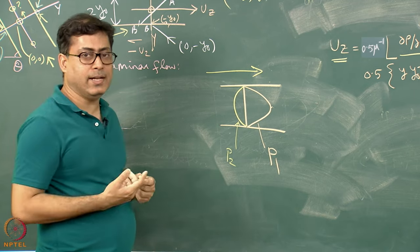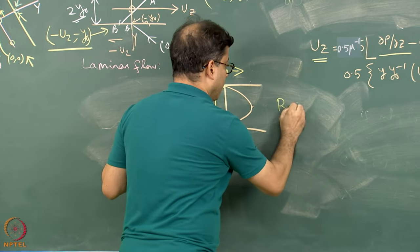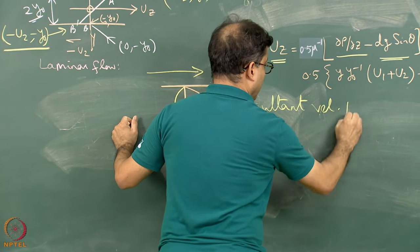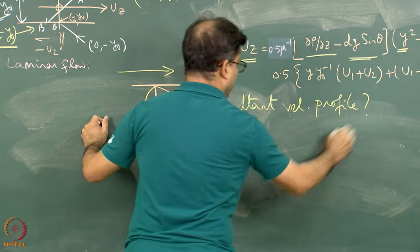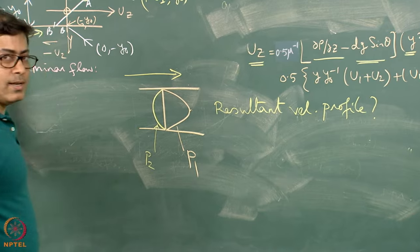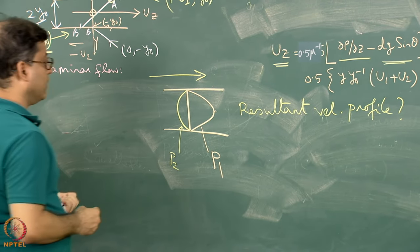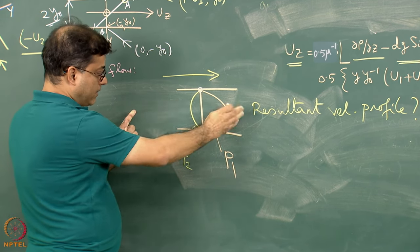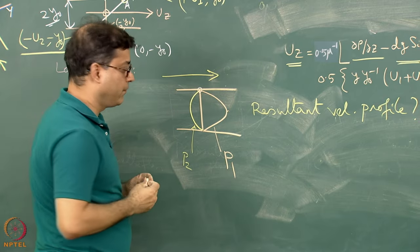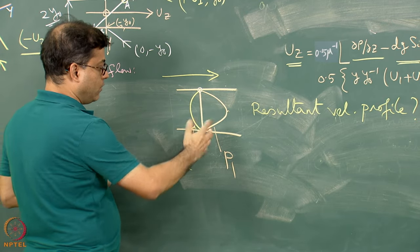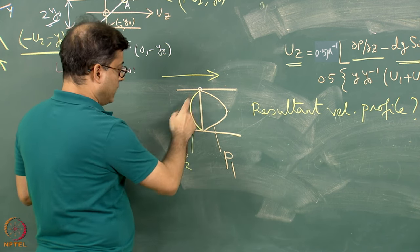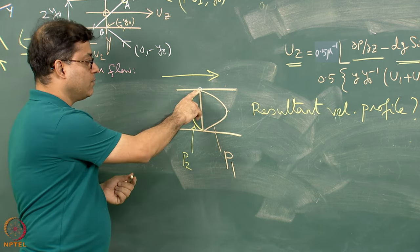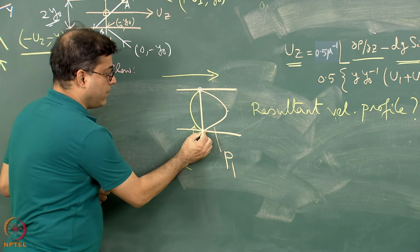What will be the resultant parabolic profile? Let us focus on a particular point. Due to the flow from left towards right, some component of flow — the point does not move. And due to the yellow parabola, some fluid flow component from right towards left — the point does not move. So if the point does not move in both conditions, when both are acting, this point is not going to move. Similarly, this point is also not going to move.